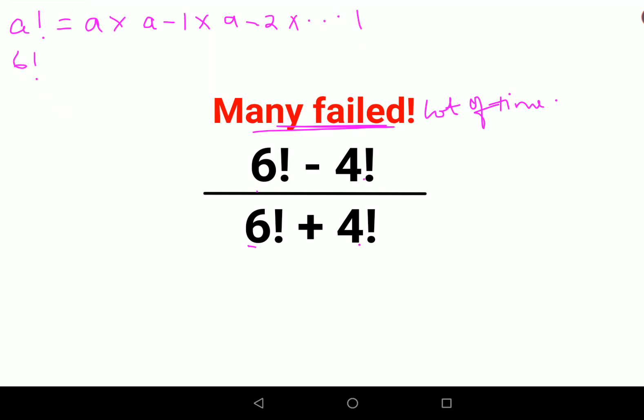So similarly, 6 factorial is written as what? 6 into 5 into 4 into 3 into 2 into 1. And 4 factorial can be written as what? It will start with 4. 4 into 3 into 2 into 1.